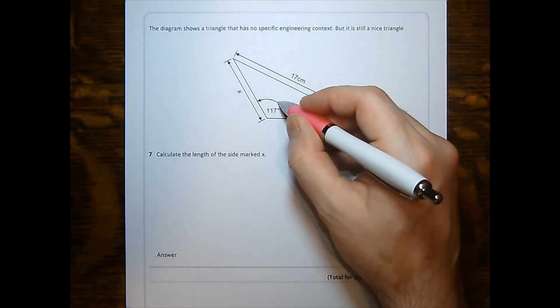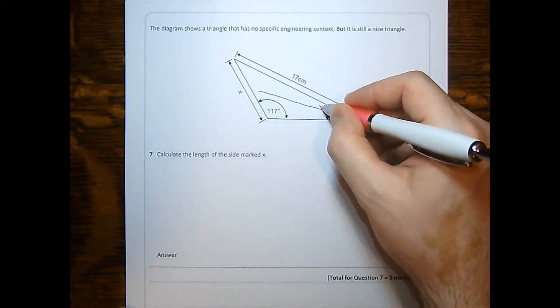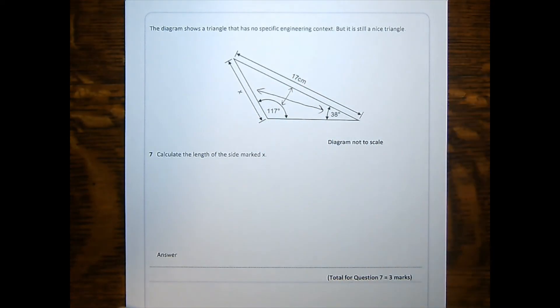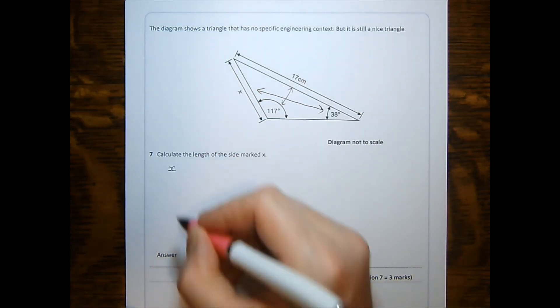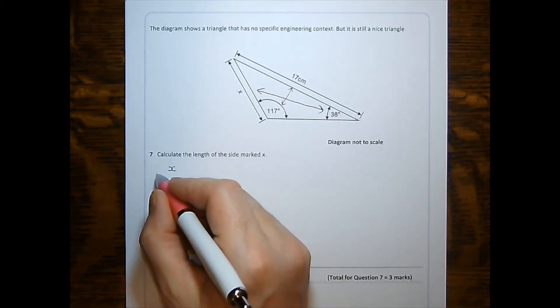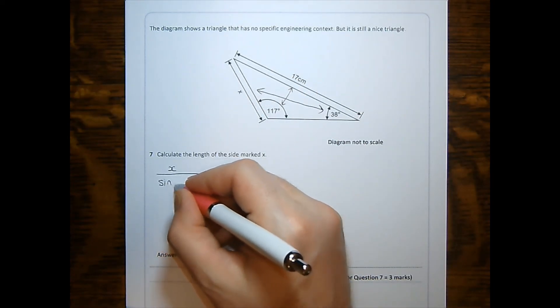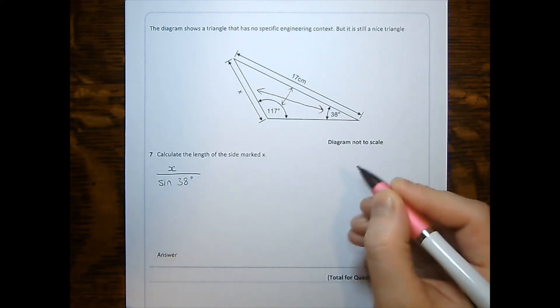In our final question, we have a side with an opposite angle and another side with an opposite angle. Therefore, we're using the sine rule. Since we're looking for a side x, I will put that on top. X will be divided by the sine of its opposite angle.